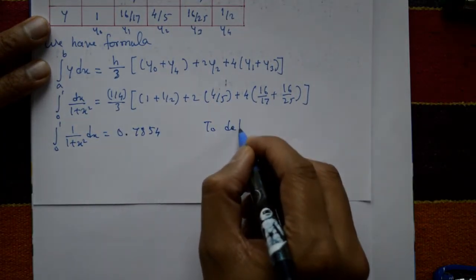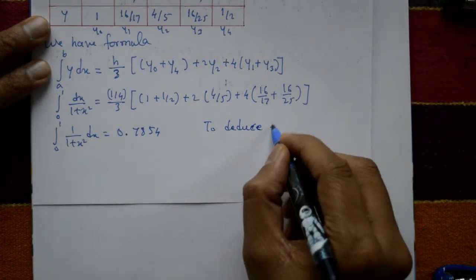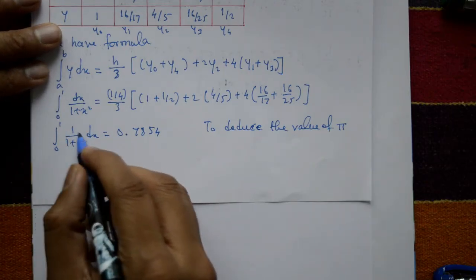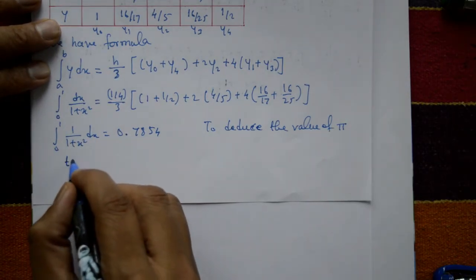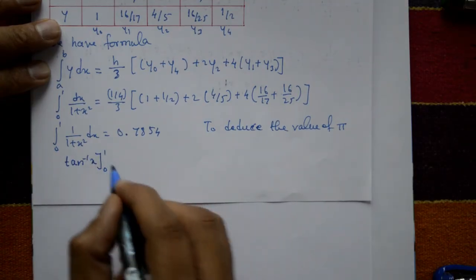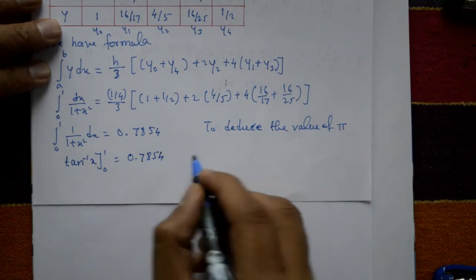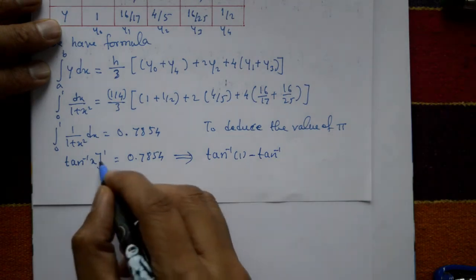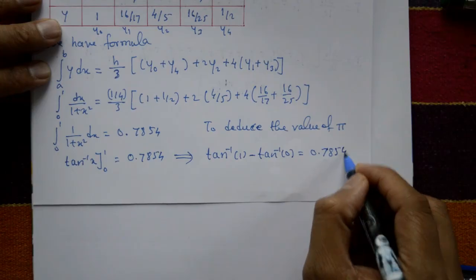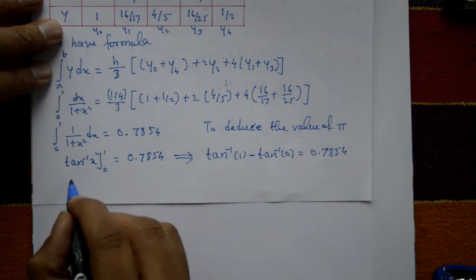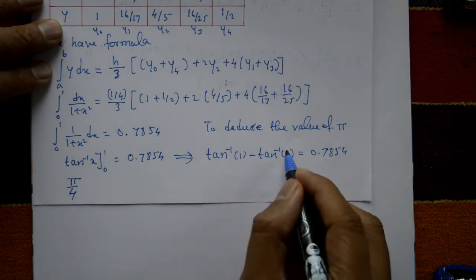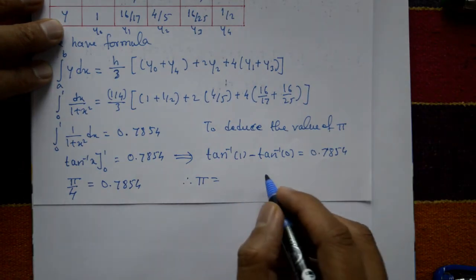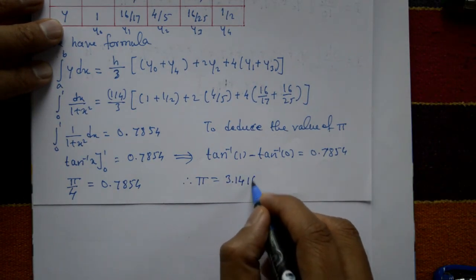To deduce the value of π: the left-hand side integral of 1/(1+x²) gives tan⁻¹(x) evaluated from 0 to 1, which equals tan⁻¹(1) minus tan⁻¹(0) = π/4 minus 0 = 0.7854. Therefore π/4 = 0.7854, and cross-multiplying gives π ≈ 3.1416. This is the required solution.